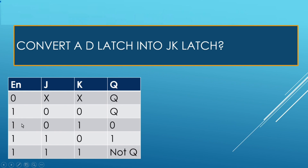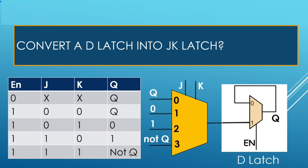When enable is 1, J is 0, K is 1, output should be 0. Similarly, when J is 1 and K is 0, output should be 1. Similarly, when both J and K are high, output should be inverted of its previous value. Let us see how it is implemented using D latch.